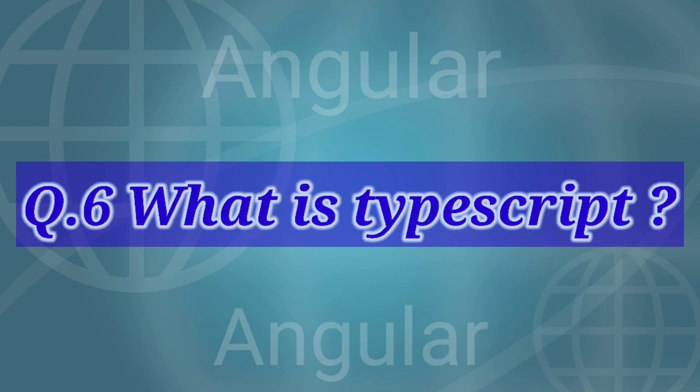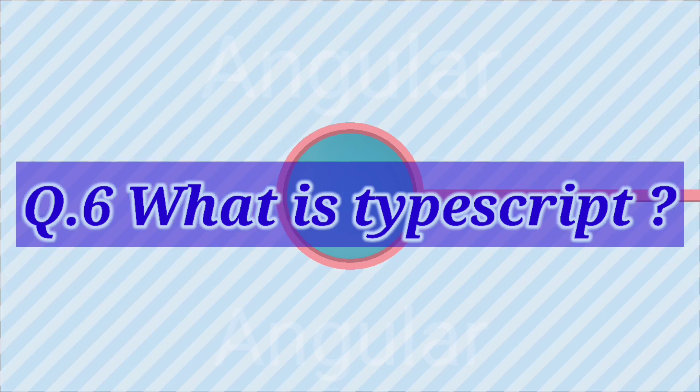The sixth question is: what is TypeScript? TypeScript is a superset of JavaScript created by Microsoft that adds optional types, classes, async/await, and many other features, and compiles to plain JavaScript. Angular is built entirely in TypeScript and uses it as its primary language. We can install TypeScript using the Angular CLI command: npm install -g typescript.